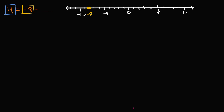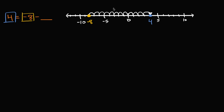Four is positive one, two, three, four — so that's four right over there. So what do I need to do to get from negative eight to positive four? I have to move to the right twelve spaces. To get from negative eight to zero, you have to add eight. And then to get from zero to four, you have to add another four. So you have to add eight plus four, or twelve.